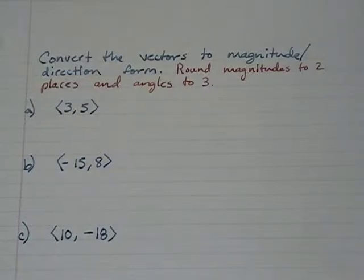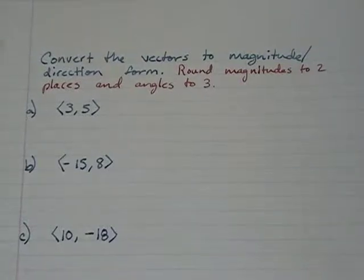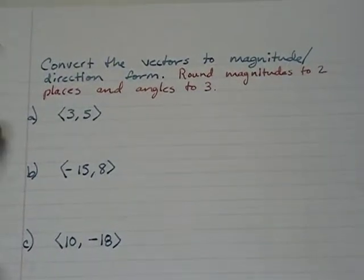Convert the vectors to magnitude and direction form, round magnitudes to two places and angles to three places. We're given three vectors and we're going to start with vector a.